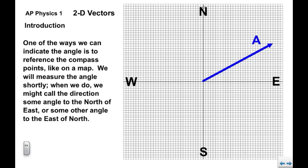So we're familiar with north, south, west, and east. We're going to measure the angle shortly. Usually when we do, we could conceivably call the direction some particular angle to the north of east. So here's east and we go some measured angle towards the north. Or we could also refer to it as some different angle to the east of north.